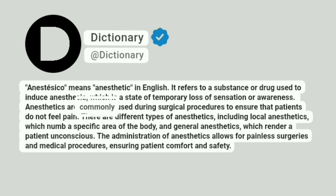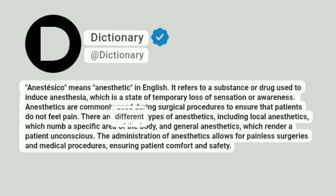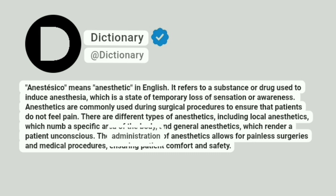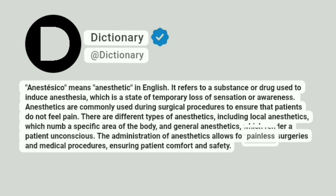Anesthetics are commonly used during surgical procedures to ensure that patients do not feel pain. There are different types of anesthetics, including local anesthetics, which numb a specific area of the body, and general anesthetics, which render a patient unconscious. The administration of anesthetics allows for painless surgeries and medical procedures, ensuring patient comfort and safety.